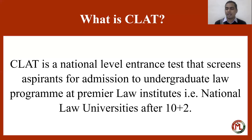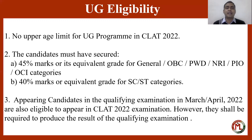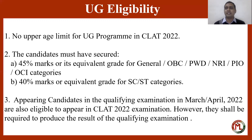Let's talk about the eligibility for the undergraduate program of CLAT. First, point number one says there is no upper age limit — so any person who has passed 12th or is appearing in 12th is eligible. Next, you need 45 percent marks or equivalent grade if you come from General, OBC, or other such categories, as mentioned on the slide from the CLAT Consortium website itself. For SC/ST categories, 40 percent marks or equivalent grade is required.